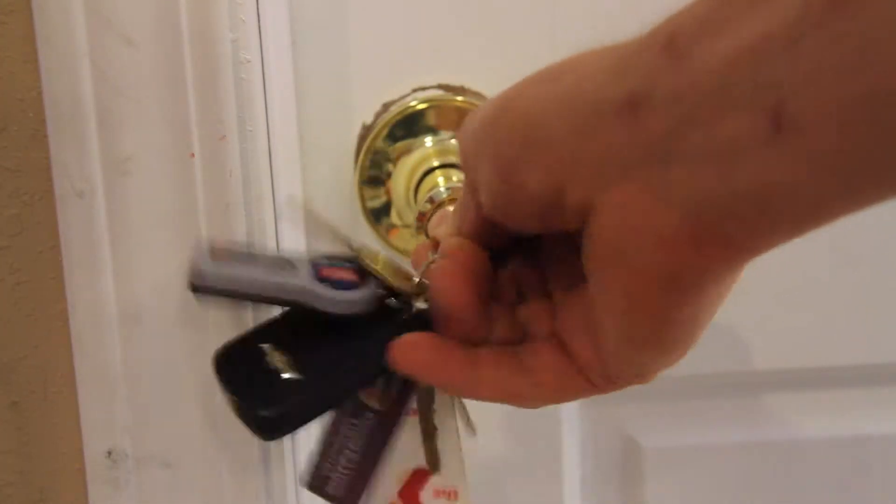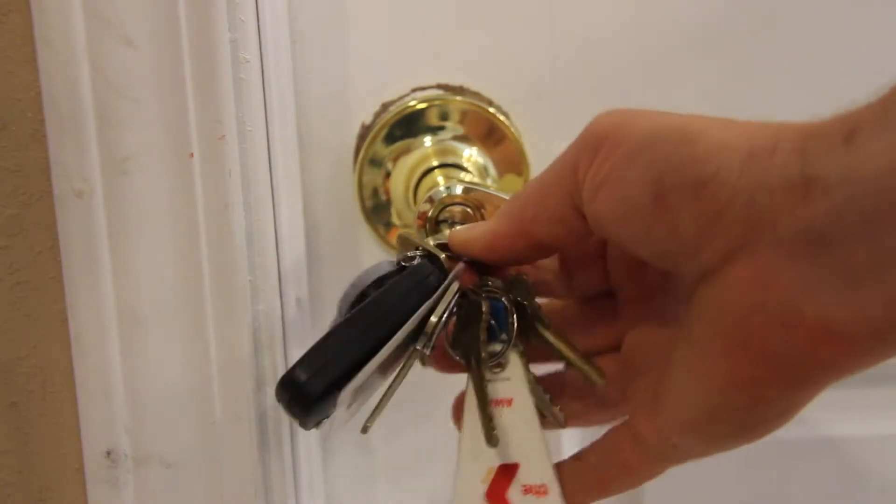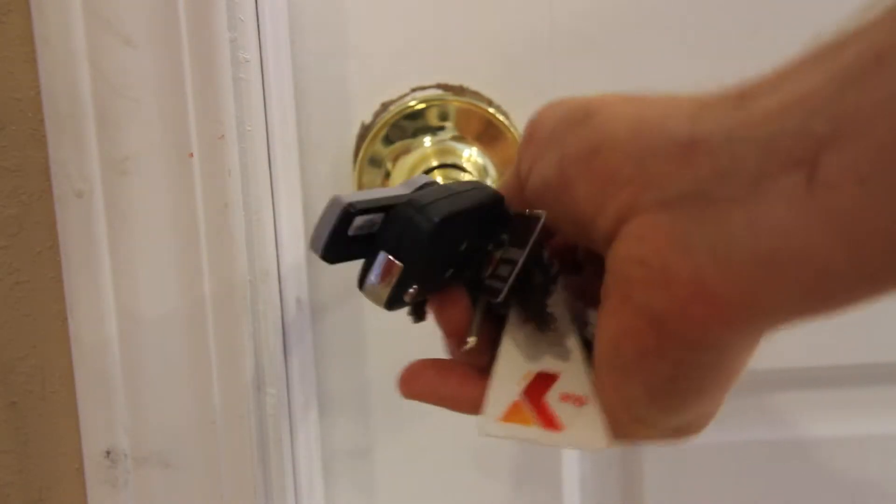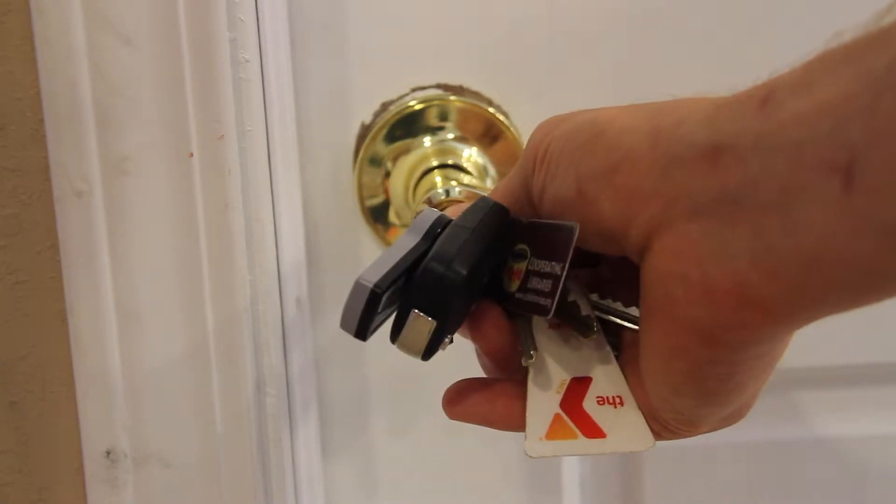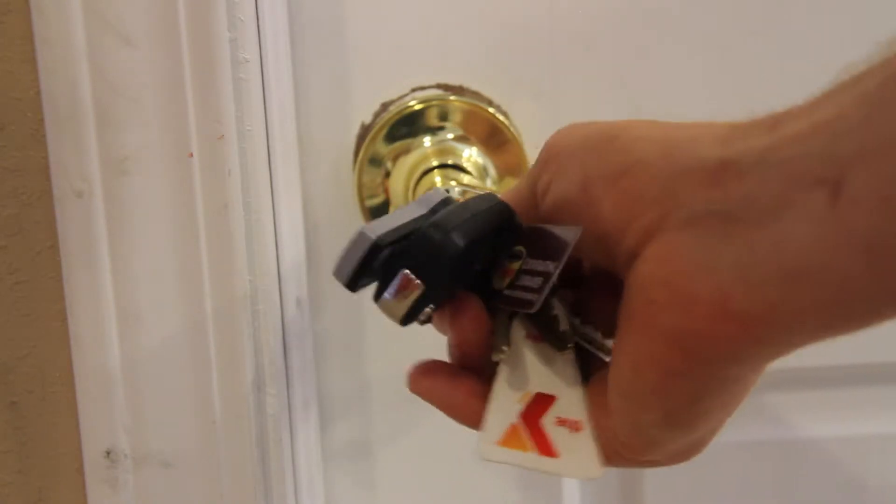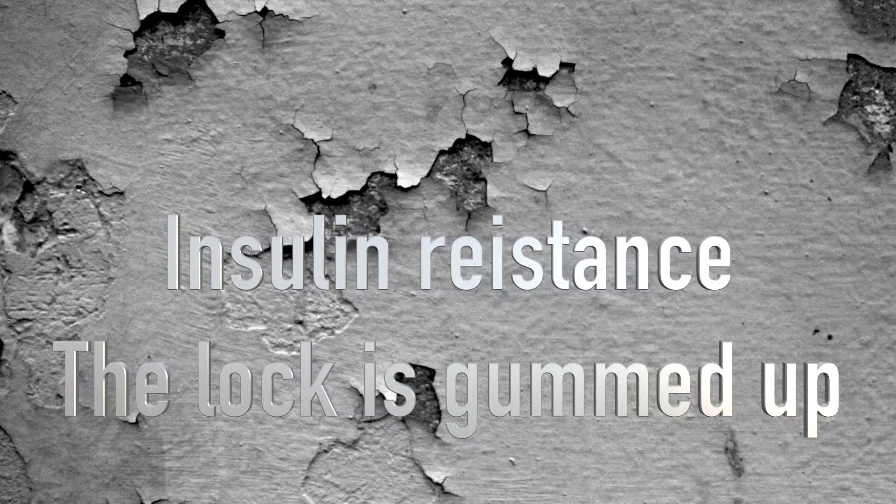In type 2 diabetes, insulin resistance, and metabolic syndrome, the key can't unlock the door. Insulin can't unlock the insulin receptor and glucose can't get into the cells, leading to all kinds of problems. Today we're going to talk about insulin resistance, the underlying problem for type 2 diabetes.